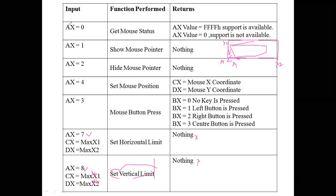To summarize: AX=0 detects the mouse, AX=1 shows the mouse pointer, AX=2 hides the mouse pointer, AX=4 sets mouse position, AX=3 handles mouse button press, AX=7 sets horizontal limit, and AX=8 sets the vertical limit of the pointer — simply restricting the mouse pointer within a specified region.